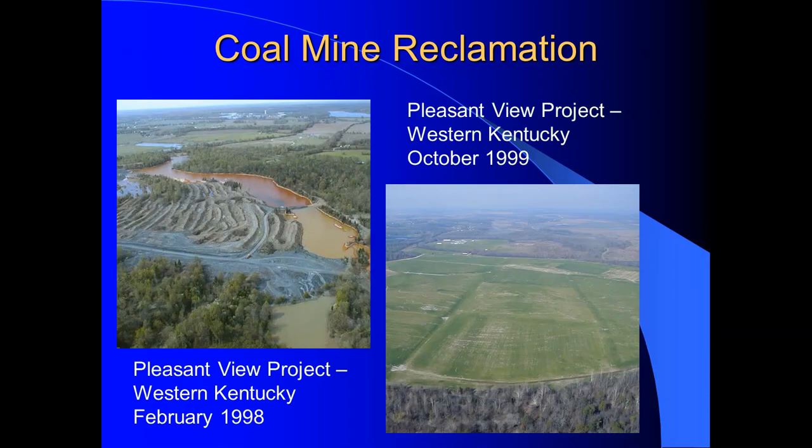Reclamation project examples show dramatic before-and-after transformations: one small coal mining site in Indiana was converted into a municipal park. Another — possibly the largest reclamation project — is a large mine in western Kentucky where the water shows clear signs of AMD contamination in the before photo.